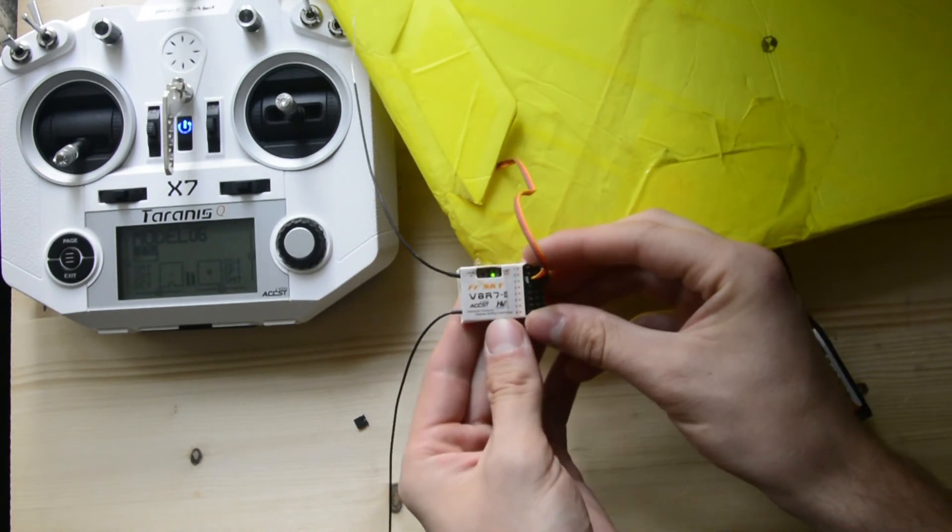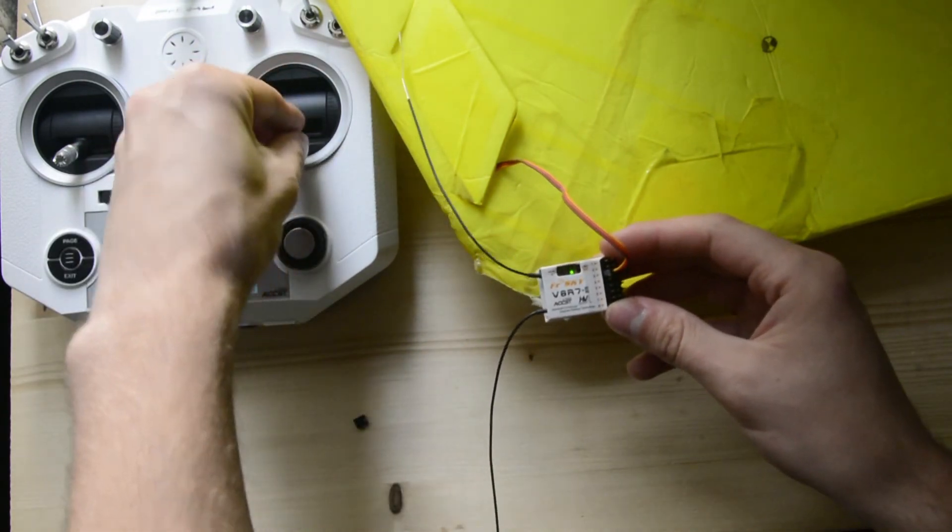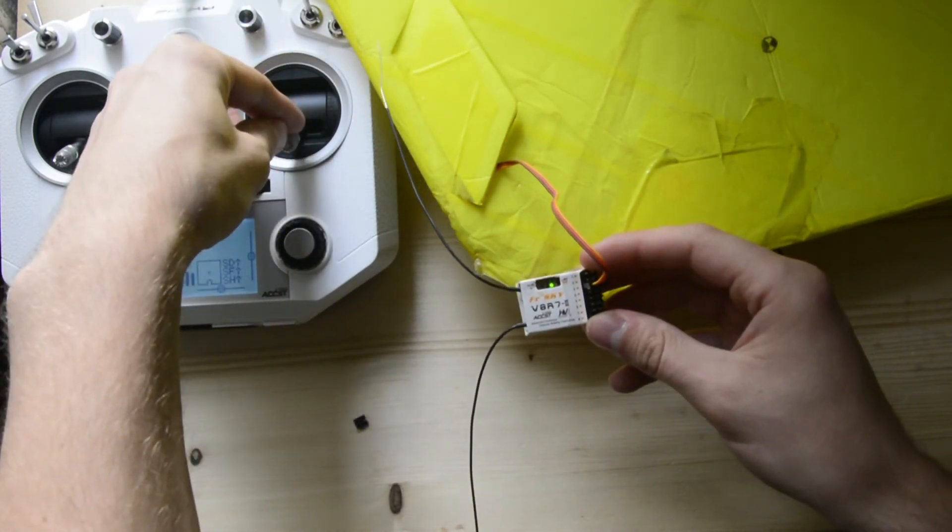The green light indicates that the receiver is receiving data from the radio. So, that's it.